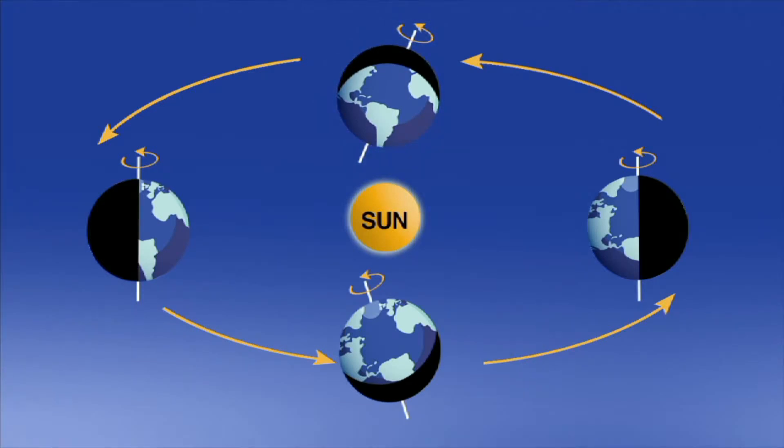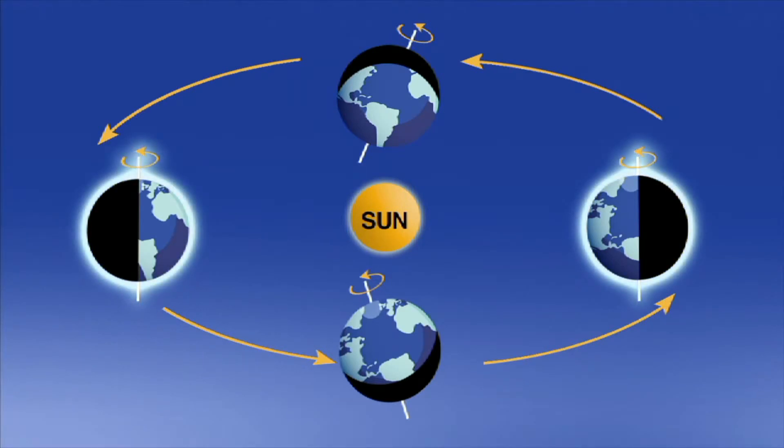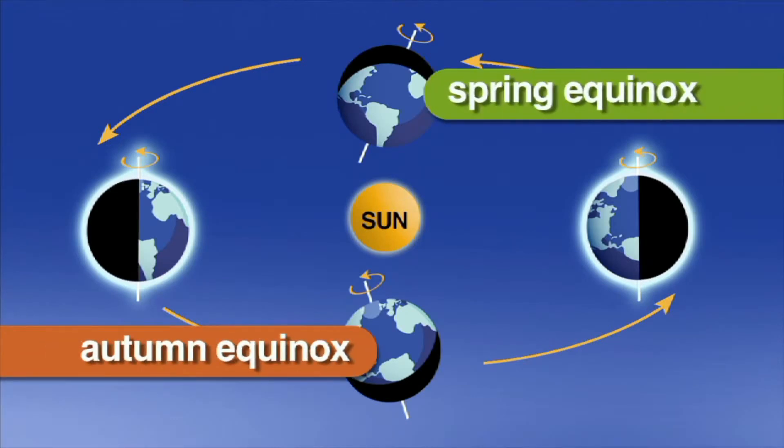During Earth's journey from summer to winter solstice and back again, it passes a point where the Earth is not tilting towards or away from the sun because of its position in orbit. These days are the autumn and spring equinoxes.